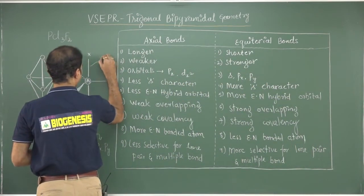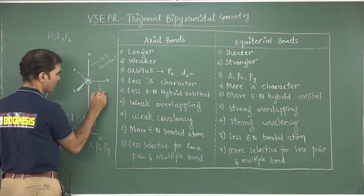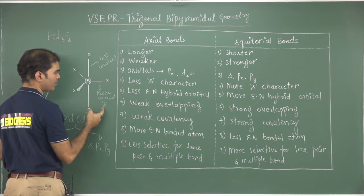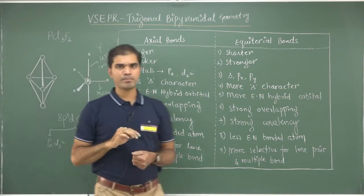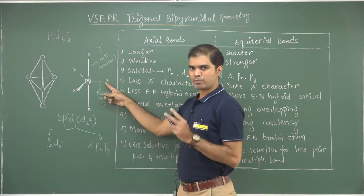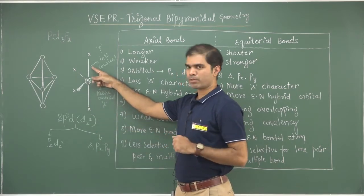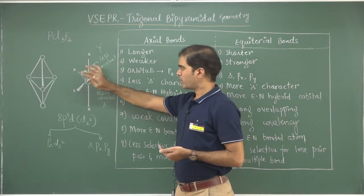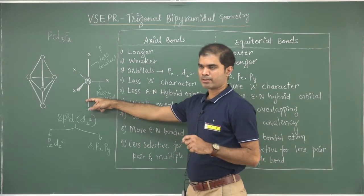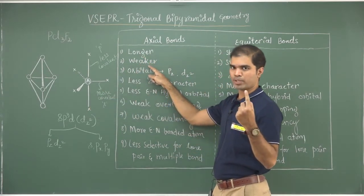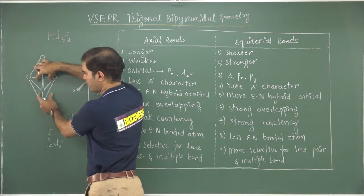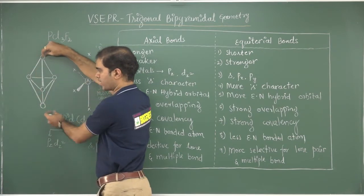So axial bonds have less covalent character, whereas equatorial bonds have more covalent character — due to greater S contribution in equatorial and greater P contribution in axial. Since overlapping efficiency of axial orbitals is weaker, axial bonds are longer and weaker. This is why when we draw trigonal bipyramidal geometry, it should be elongated along the z-axis, not compressed. The model clearly shows the axial length is larger compared to the equatorial width — because Pz and dz² are weaker, making those bonds longer.